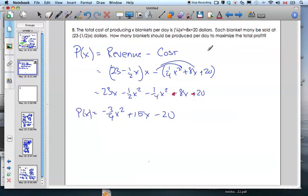If I want to maximize my total profit, I'm going to find the derivative of my profit, which will be negative three-halves X plus 15, and set it equal to zero.